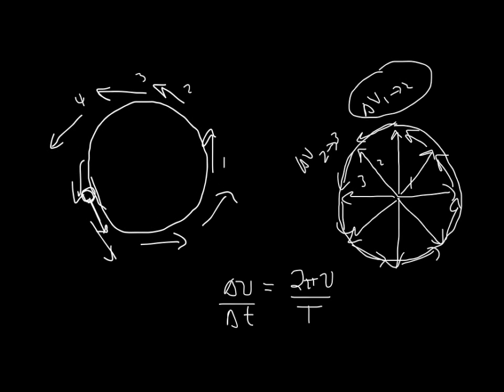And you see that the acceleration magnitude is really nothing other than 2 pi v over the time. But wait a minute, what is the time? The time is 2 pi r divided by the speed. So that's 2 pi v divided by 2 pi r over v. The 2 pi's cancel, and you get v squared over r.